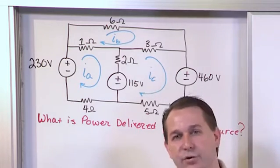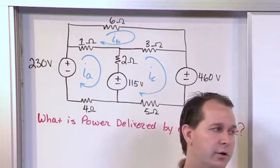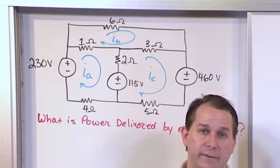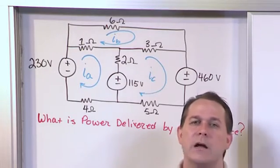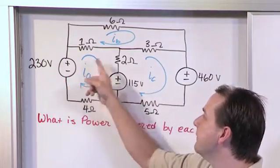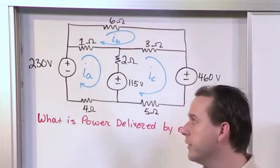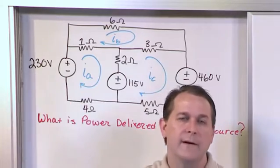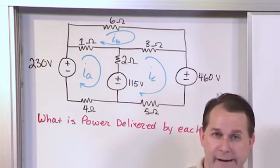These techniques that you're learning for mesh current and also for node voltage that we've studied before are so important because right now we're only dealing with resistors, and we're also only dealing with these constant voltage sources that don't change. It's a constant 230 volts, for instance. But in a little bit, in the future...